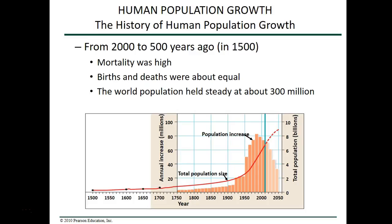Now birth rates are starting to decline as well. In some populations, such as in Scandinavia and Australia, populations are actually declining. But in other parts of the world, like Africa, population increases continue. Currently the human population still appears to be growing exponentially, but we have already surpassed a reasonable carrying capacity — especially considering carbon dioxide levels. The big question is how fast the human population will stabilize, or whether it will decrease dramatically as a result of overshooting our carrying capacity.